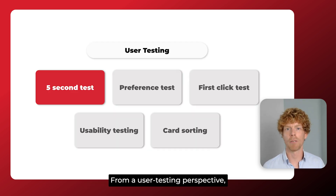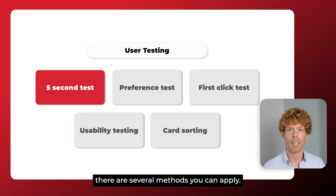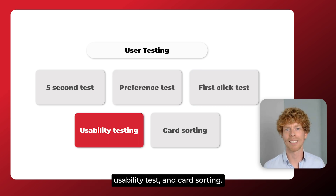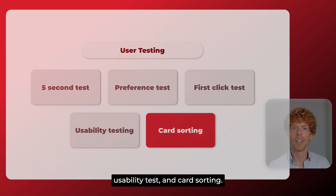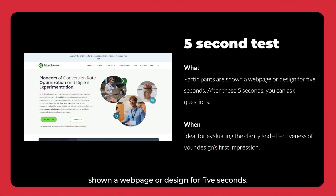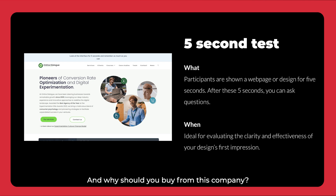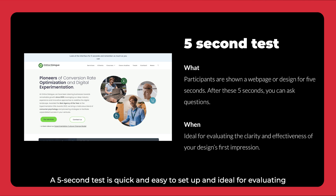From a user testing perspective, there are several methods you can apply. Let's cover five: the five second test, preference test, first click test, usability test, and card sorting. During a five second test, participants are shown a webpage or design for five seconds. After these five seconds, you can ask questions such as: What do you think this page was about? What do you think you can do on this website? What does the company sell? Why should you buy from this company? And what grabbed your attention? A five second test is quick and easy to set up and ideal for evaluating the clarity and effectiveness of your design's first impression.